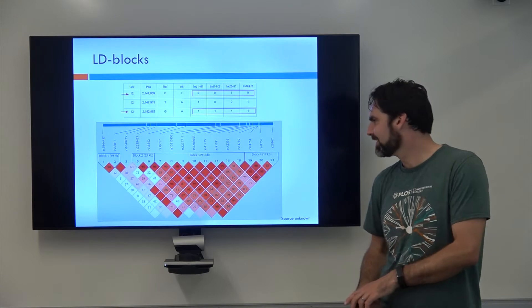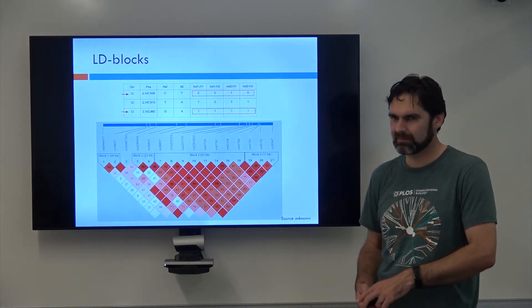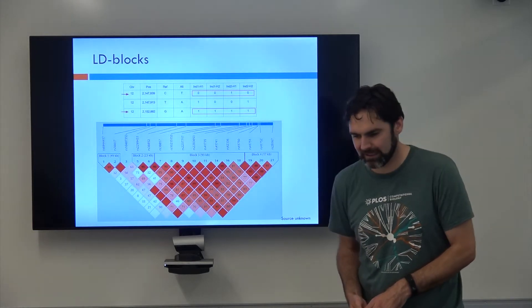And the little triangles mean that the things within that region are usually inherited together. Yeah. Which you can call a haplotype.